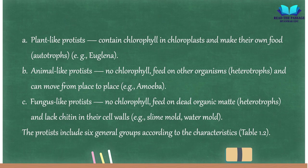Animal-like protists have no chlorophyll, feed on other organisms (heterotrophs), and can move from place to place, e.g., Amoeba. Fungus-like protists have no chlorophyll, feed on dead organic matter (heterotrophs), and lack chitin in their cell walls, e.g., slime mold, water mold.